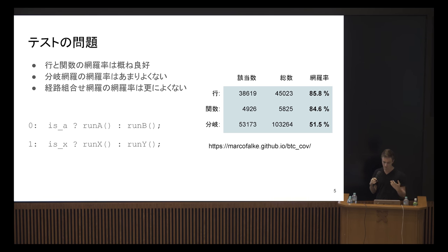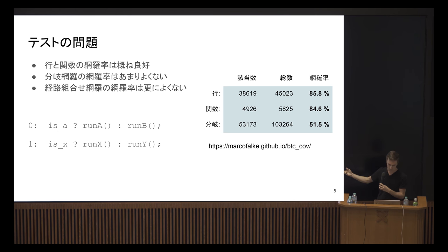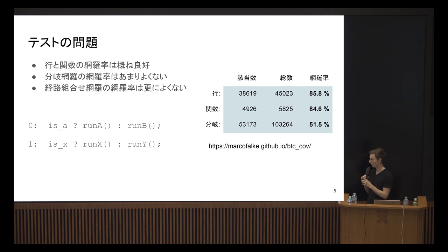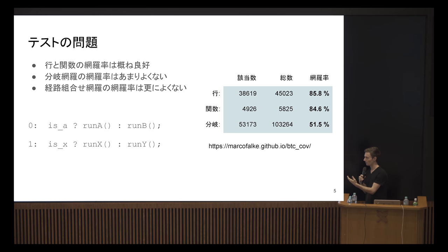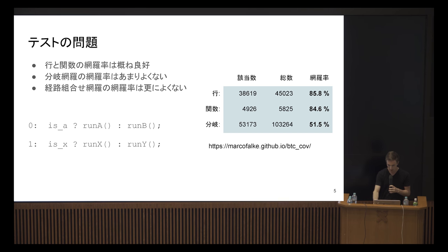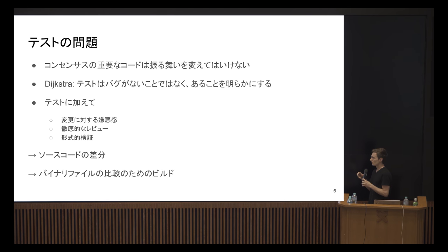For branch coverage it depends on what you pass in for those booleans. If you run it once you have 50 percent branch coverage. For path coverage it's even worse — you would have to run it four times to cover all possible paths: first A then X, A then Y, B then X, or B then Y. Just adding another line to this program in the same fashion makes it eight paths, and it grows exponentially — it's impossible to test all of those cases.